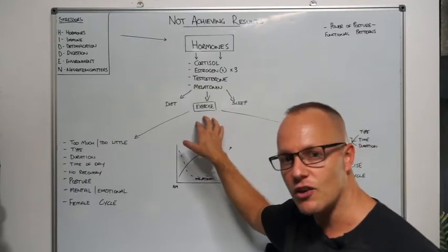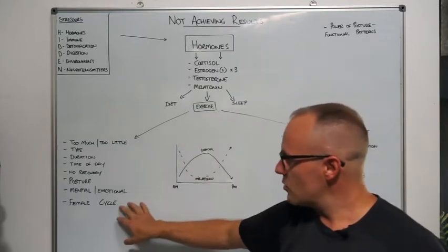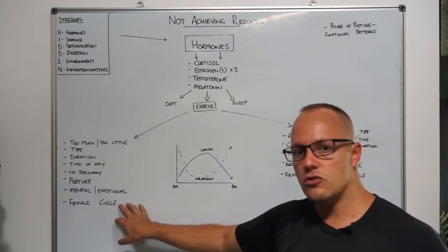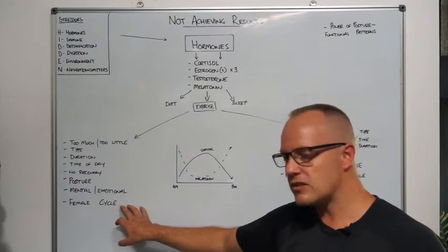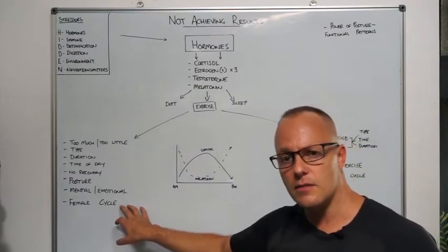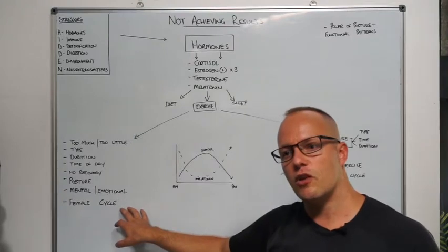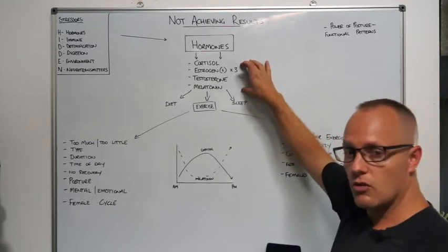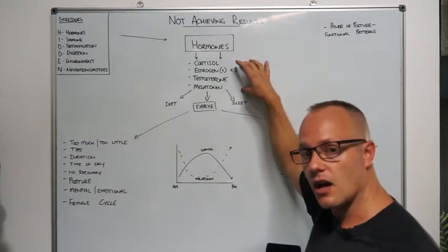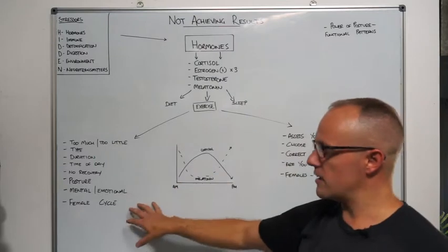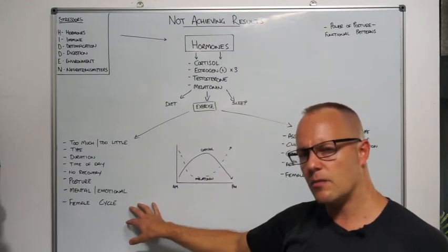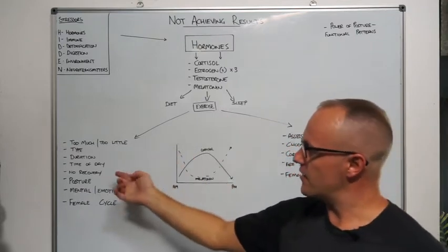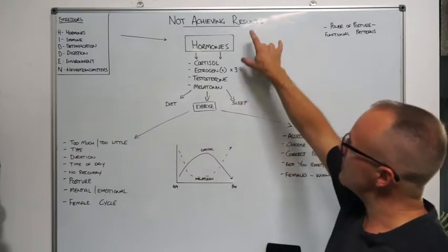We're trying to get the neurotransmitters working properly. Also, a very important thing is females in their cycle. This is huge, something that seems to be neglected. Yes, we can train females the same as males, but there's a few more things we've got to understand and be careful with. Obviously, females are going to have a lot more going on depending on the time of their cycle. Learning that cycle and where you're at is very important as to what type of exercise you should be doing.